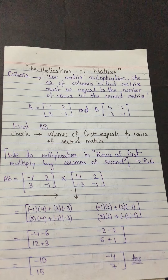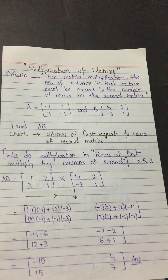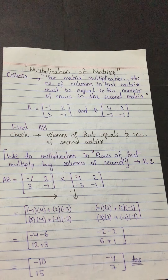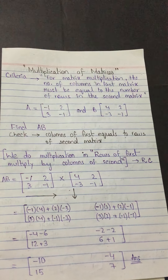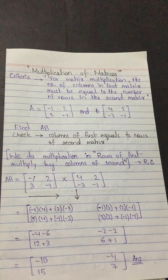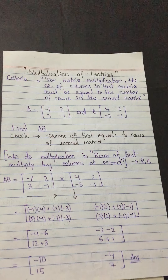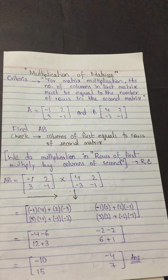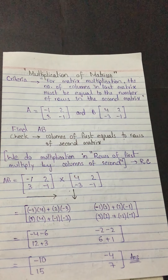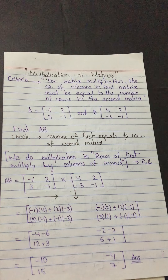Multiplication of matrices — this topic can be a bit confusing because you have to remember a lot of things. We will first discuss the criteria, since we have discussed a criteria for addition and subtraction. That criteria says that in order to add or subtract two matrices, the order should be the same: the rows and columns of both matrices should be the same. If they are the same, we can add or subtract; if not, we cannot.